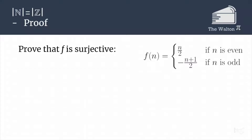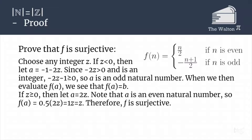The second thing we have to prove is that f is surjective. To prove something is surjective, we start by picking any element in the codomain — so we pick any integer z. We deal with two cases: if z is less than zero, and if z is greater than or equal to zero. If z is less than zero, we choose the natural number a = −1 − 2z. Since −2z is greater than zero and is an integer, −z − 1 is greater than or equal to zero, so a is an odd natural number. When we evaluate f(a), we get f(a) = z.